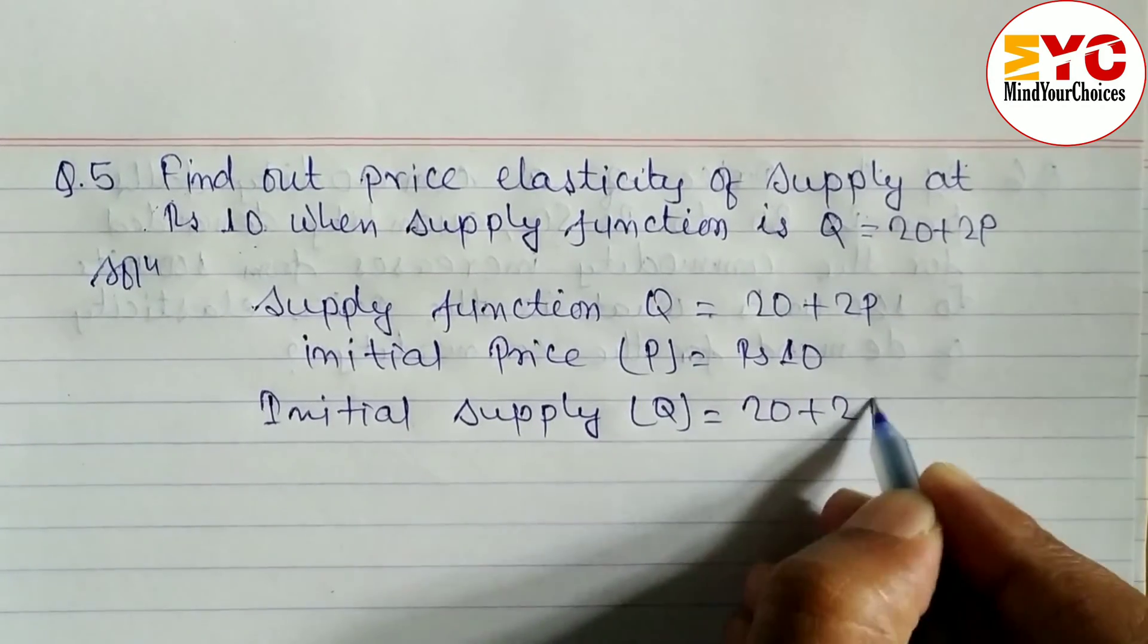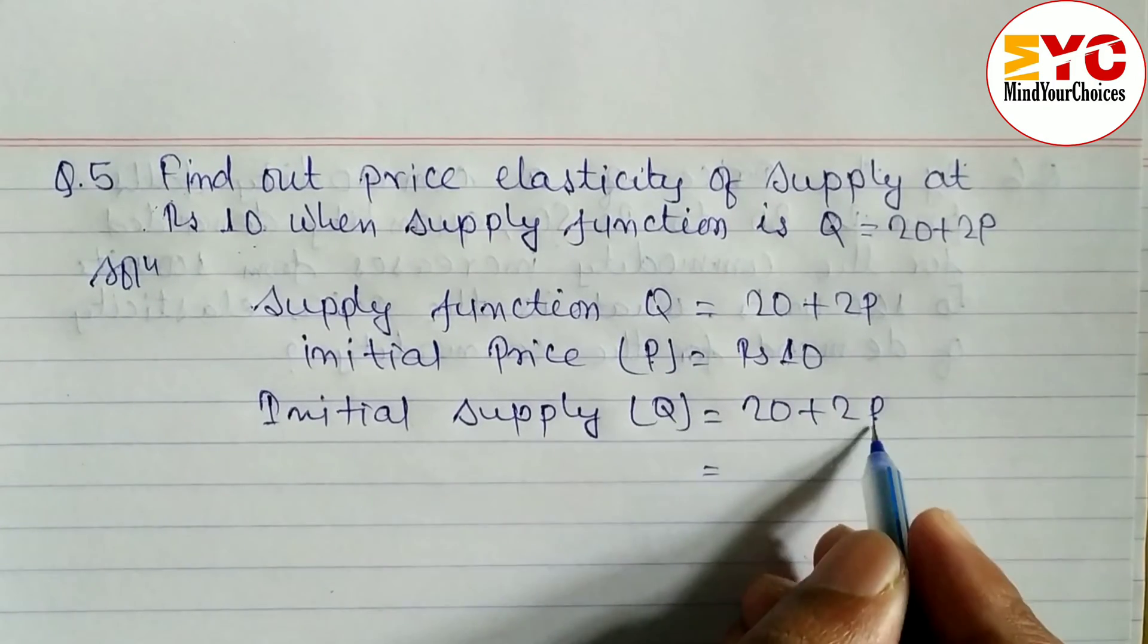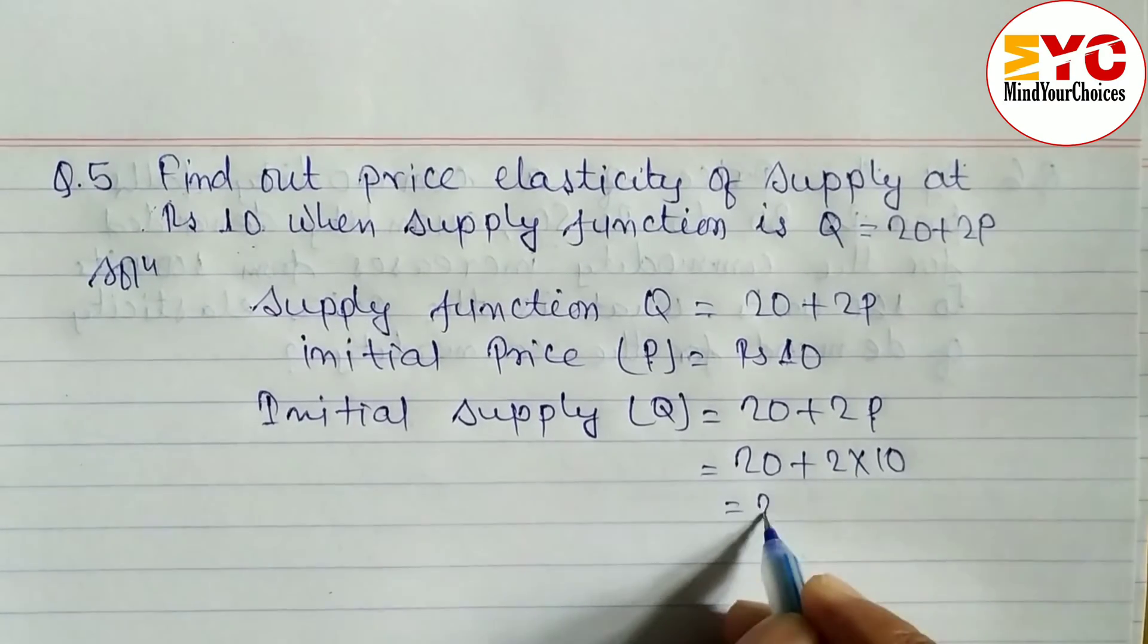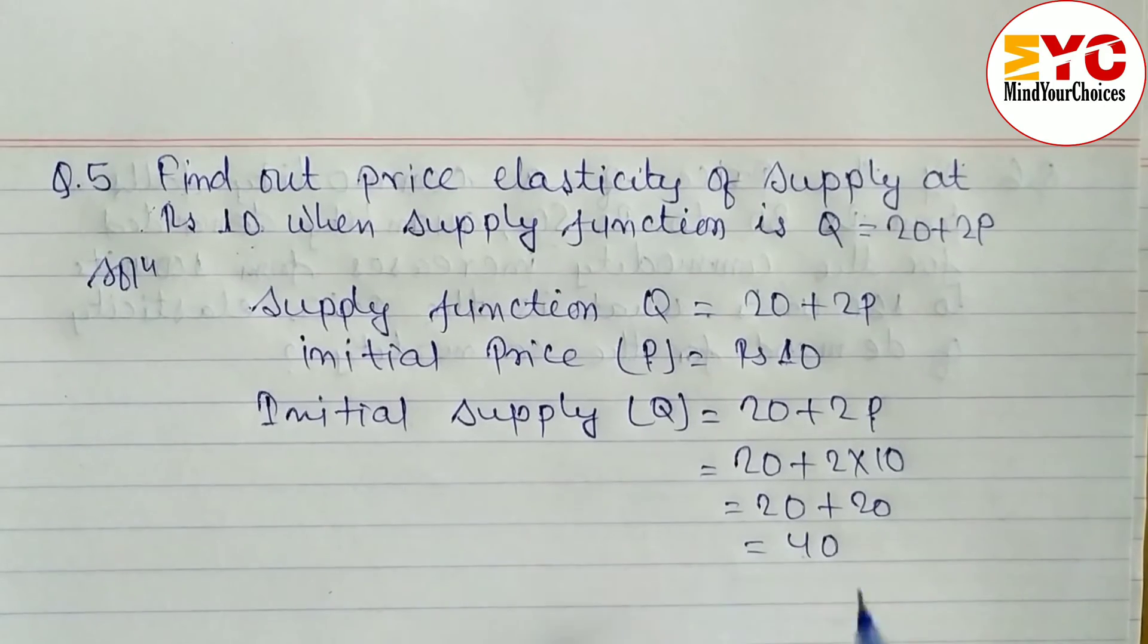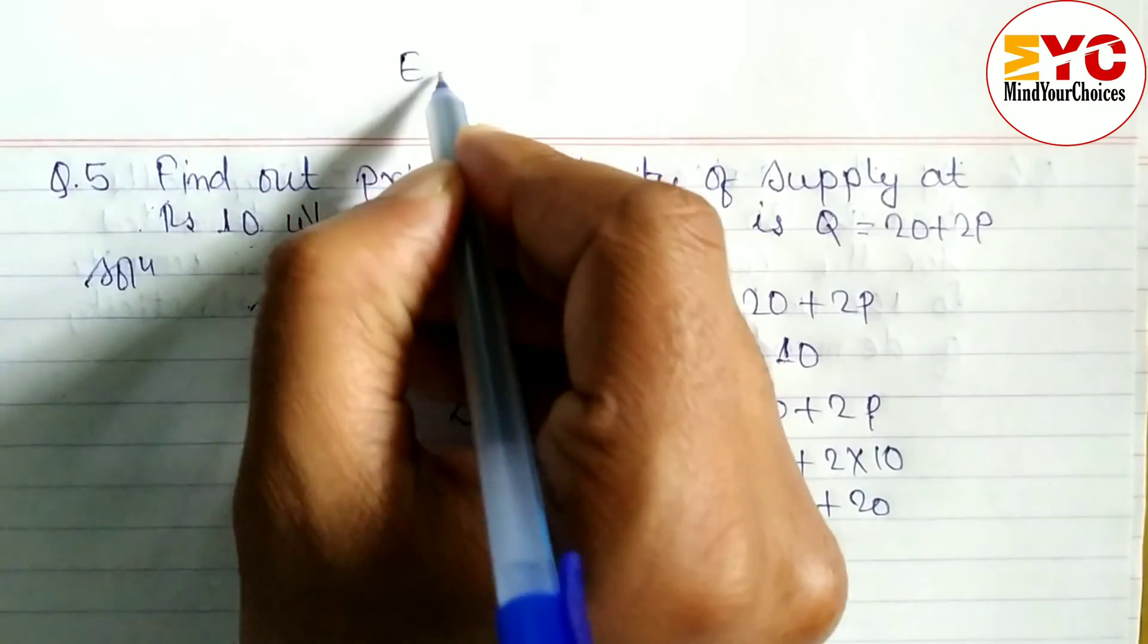Now we have to put the value of P. The value of P is 10, so in place of P we write 10. So 20 plus 2 into 10, we get 20 plus 20 equals 40. This is the initial supply.